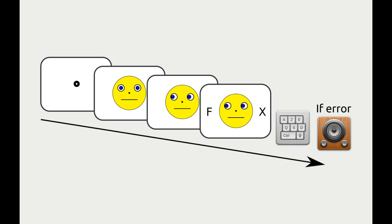Every trial starts with a fixation dot in the center of the screen, followed by a neutral gaze cue — a smiley looking straight at you. This is followed by a gaze cue where the smiley looks either left or right, and then a target and distractor appear while the gaze cue remains visible. The distractor is always the letter X, and the target is F or H. The participant presses Z for F with their left hand, or M for H with their right hand. If they make a mistake, we play a sound for feedback.